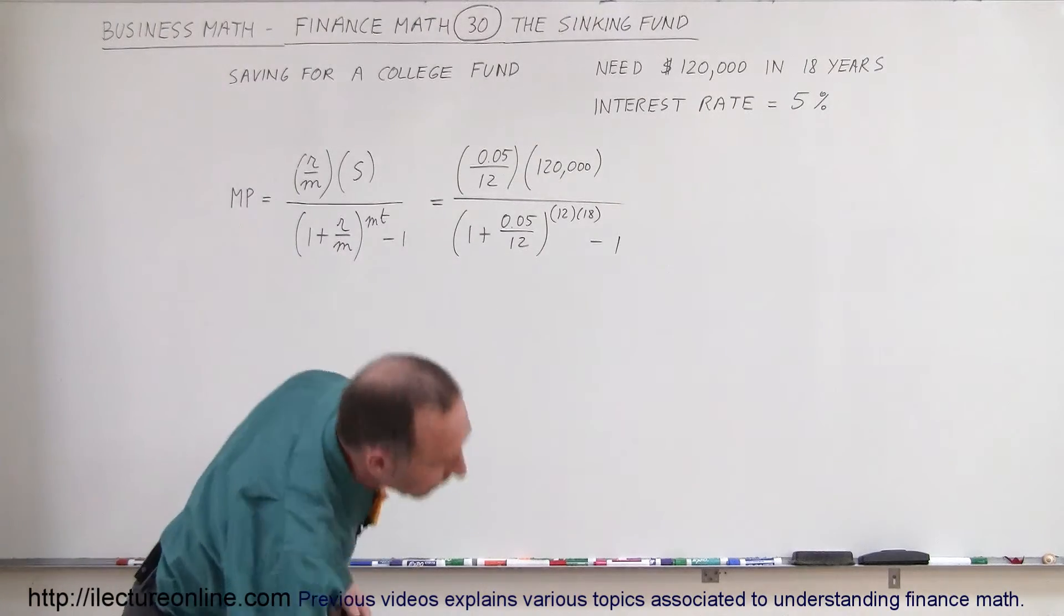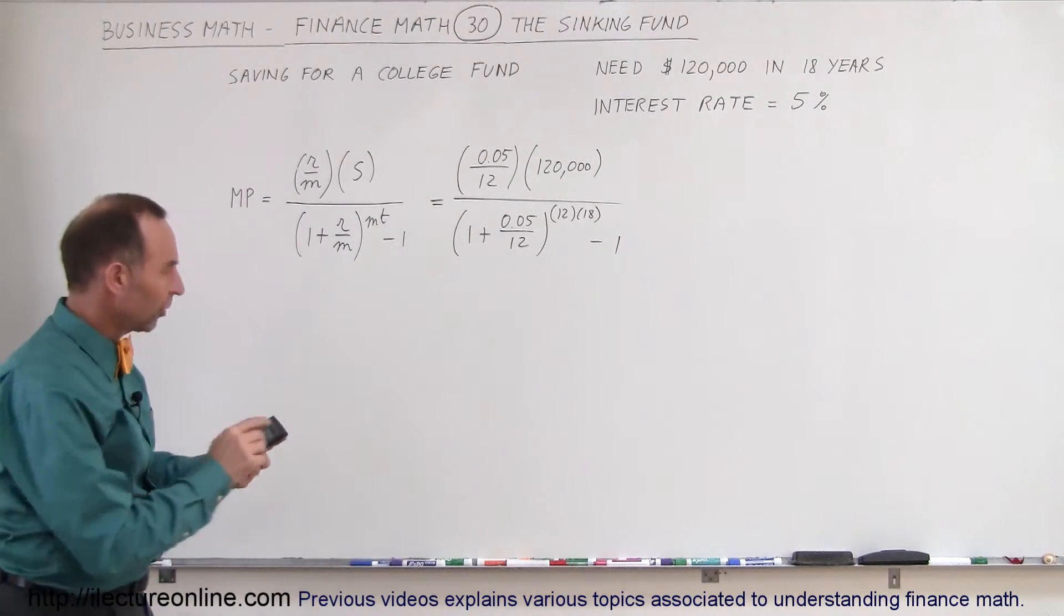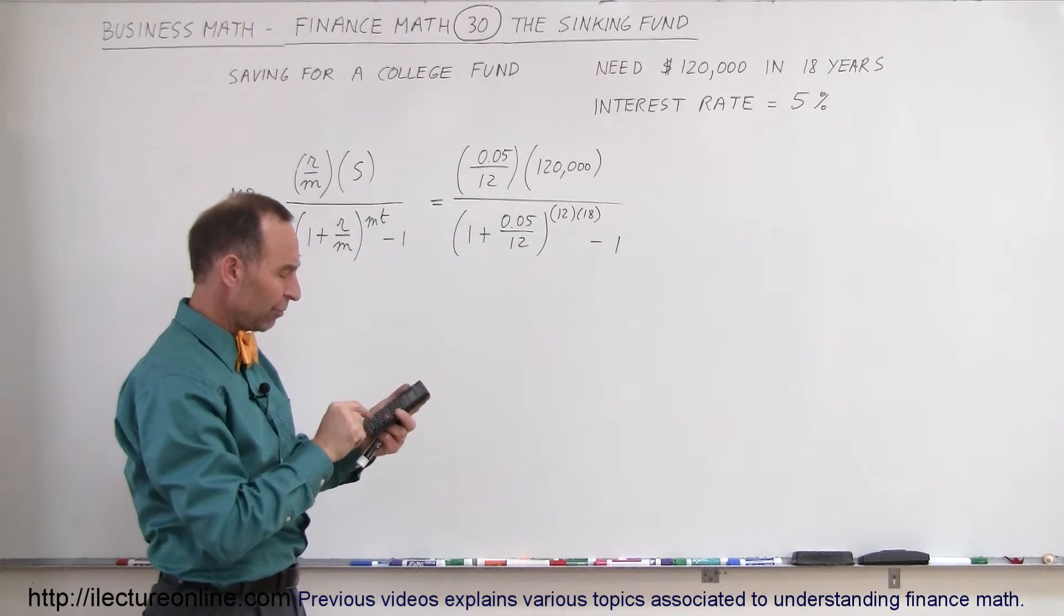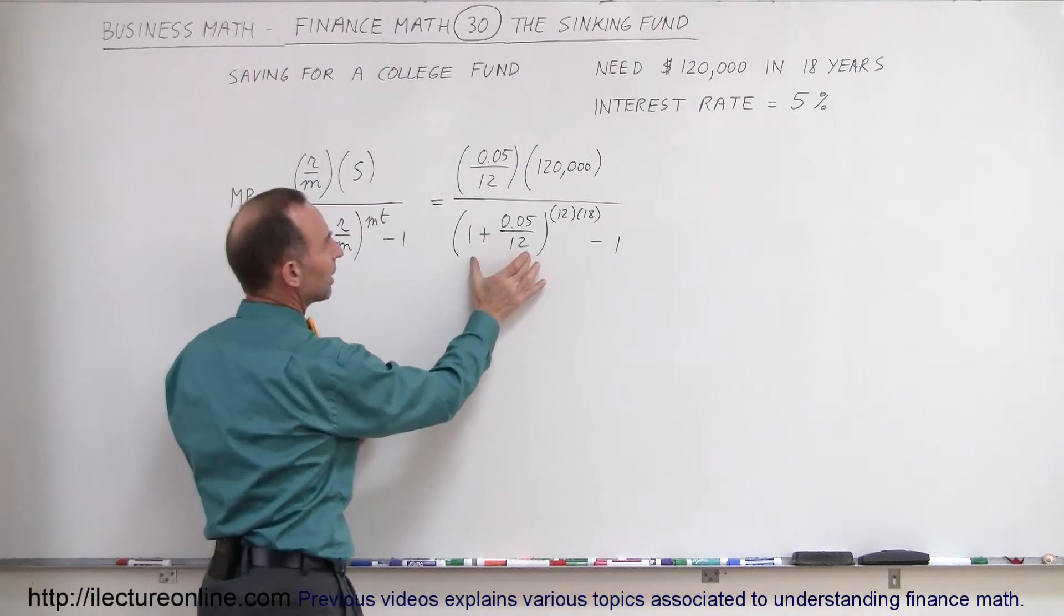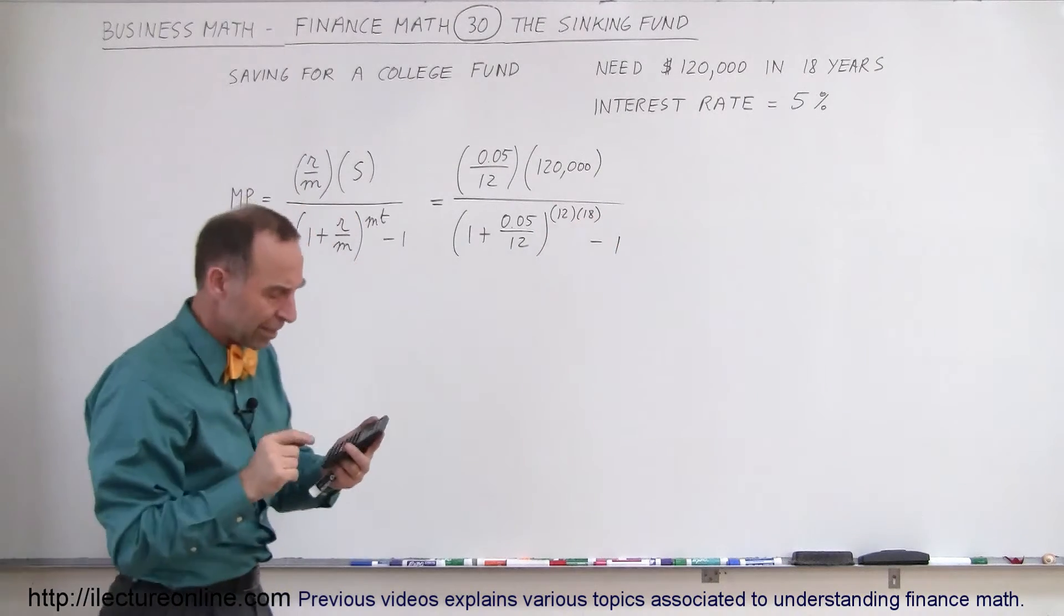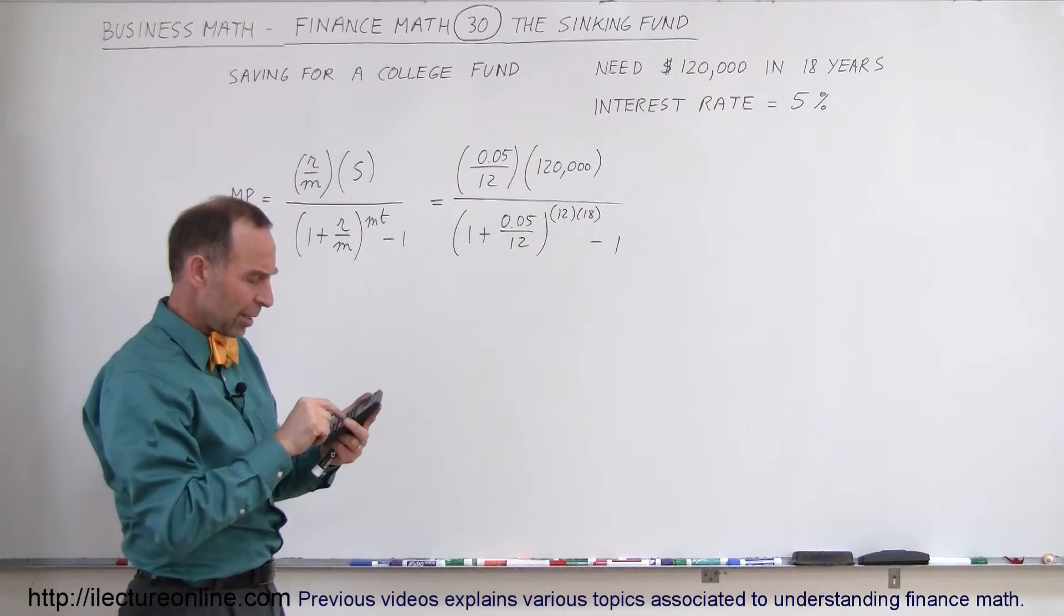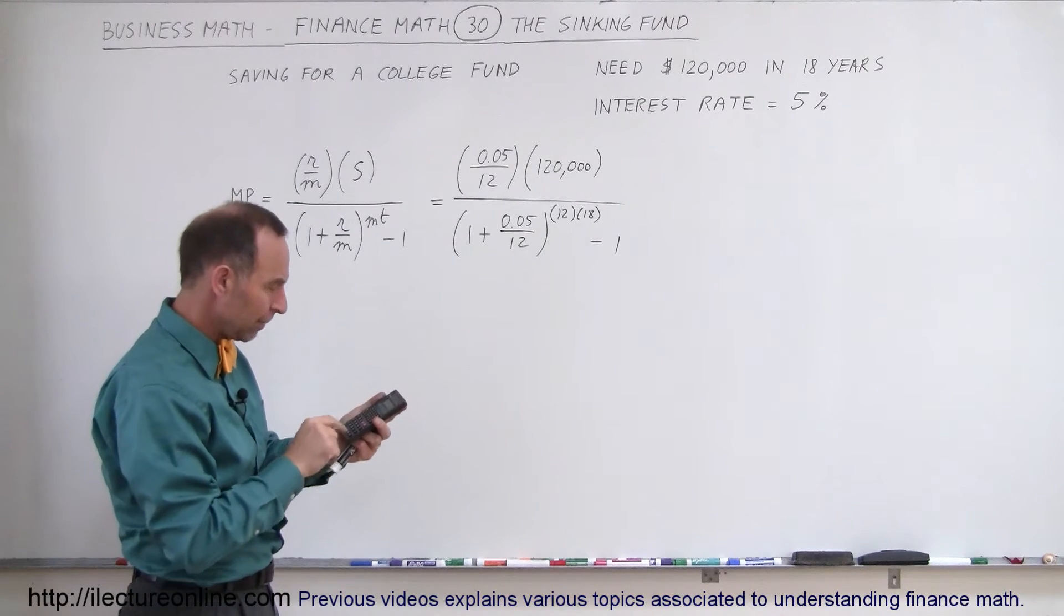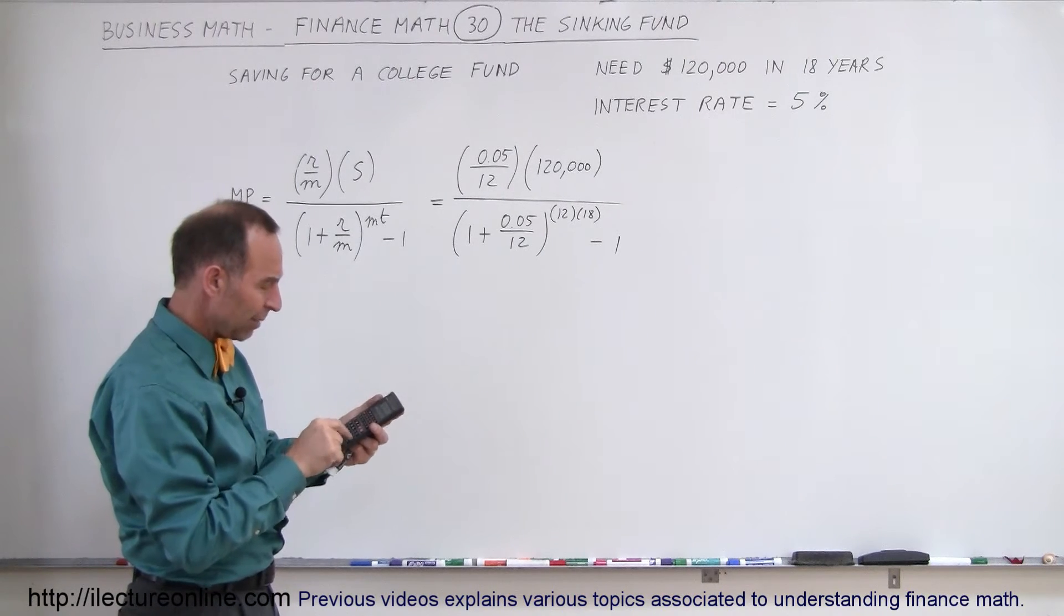All right, let's go ahead and calculate out the amount. So starting from the denominator here, I have 0.05 divided by 12 plus 1, that's the quantity in here, raised to the 12 times 18 power, so raised to the 12 times 18, that's 216 power, and then we subtract 1 from that, minus 1.